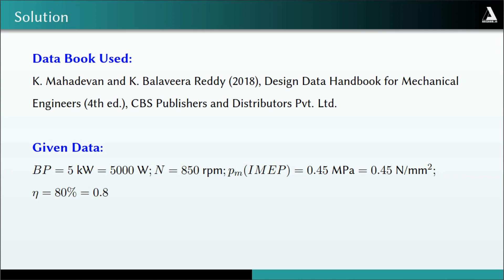The data given in the problem are: brake power BP is 5 kilowatts (5000 watts), speed N is 850 RPM, indicated mean effective pressure PM is 0.45 MPa or 0.45 N/mm², and mechanical efficiency eta is 80% (0.8).